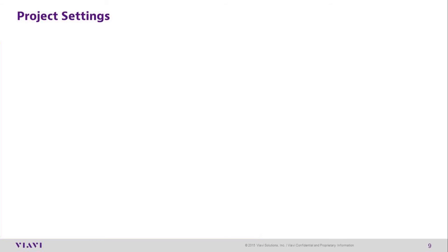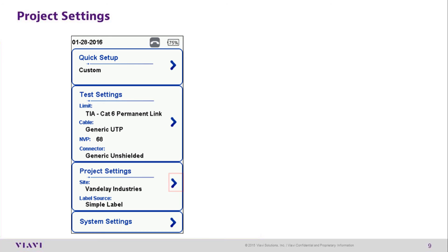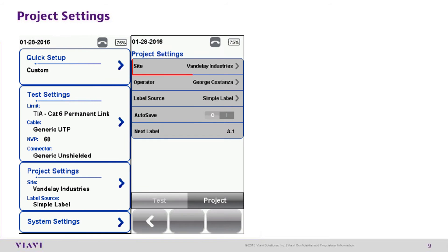The Project Settings screen is where you're able to set up projects that you're going to be testing on. There are several options available for customizing your project settings. Site is the area where you enter the site you're currently testing at — for example, ABC Industries. Operator allows you to identify the technician who is conducting the test. This is important if any questions regarding the test results come up, as the operator's name will be associated with each test recorded.